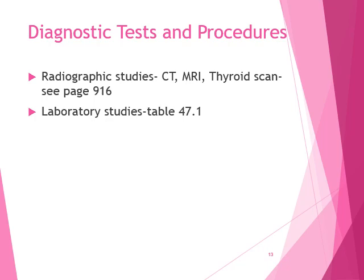There are some lab studies in table 47.1 starting on page 914. On page 917 it talks about T3, T4, thyroid stimulating hormone, parathyroid hormone, calcium, and phosphate. These are all lab tests that are drawn and tell the doctor what could be going on with the patient when they present with certain symptoms.